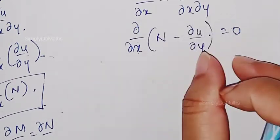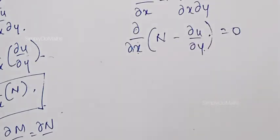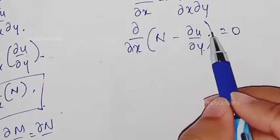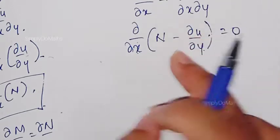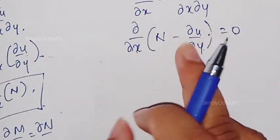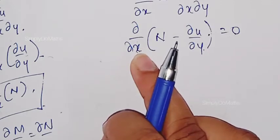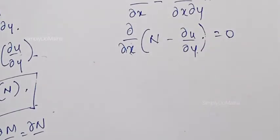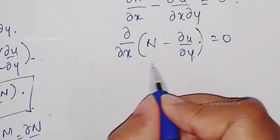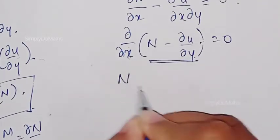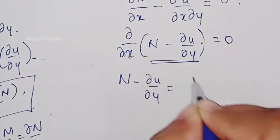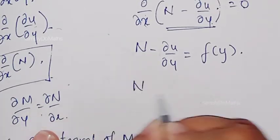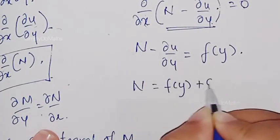Whenever you get a derivative equal to 0, that implies the function is constant with respect to x, meaning it should be a function of y only. Because here this term is differentiated with respect to x, not with respect to y, and y is treated as constant. So (N − ∂u/∂y) is a function of y, which we write as N = f(y) + ∂u/∂y.